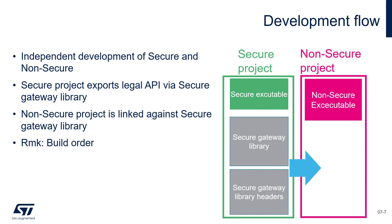The development flow with TrustZone is also something new. The secure and non-secure projects are built separately and are often developed by different teams, possibly even different companies. The secure project can optionally export legal APIs to the non-secure side; in that case the output of the secure build is a secure gateway library along with associated library headers. The non-secure project is then linked against this library, so the build order is: secure project first, then non-secure.